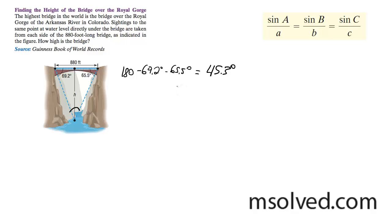And then what we're going to do now is we just need to find one of these sides. I'm going to go ahead and go with this side. So I'm going to do sine of 45.3 degrees, and we're using the law of sines to find this. 880 feet is equal to sine of 69.2 degrees over x.